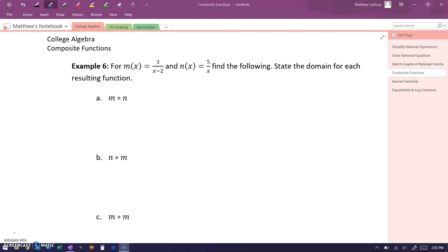In part A, we want to find m of n, so this means we would want to find the composition of m with our function n, meaning we want to evaluate that function m at 5 over x.